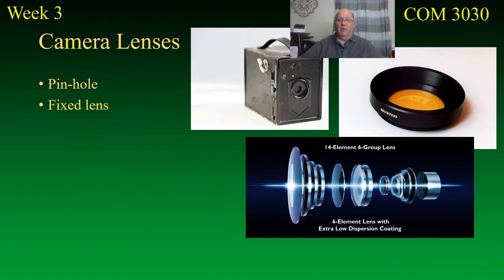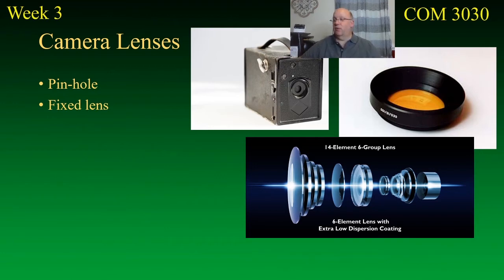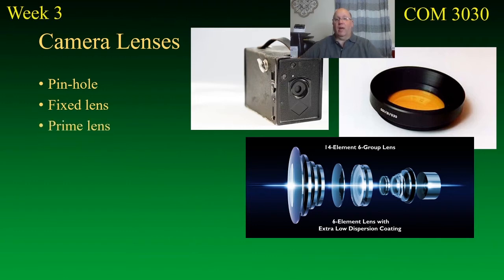The GoPro camera works that way too — it has a single lens that basically gives you everything in front of the camera, and from there you can pick and choose what you want. If you're using a cell phone camera you can't really zoom in or out, at least not truly, because there are no optics in that camera.